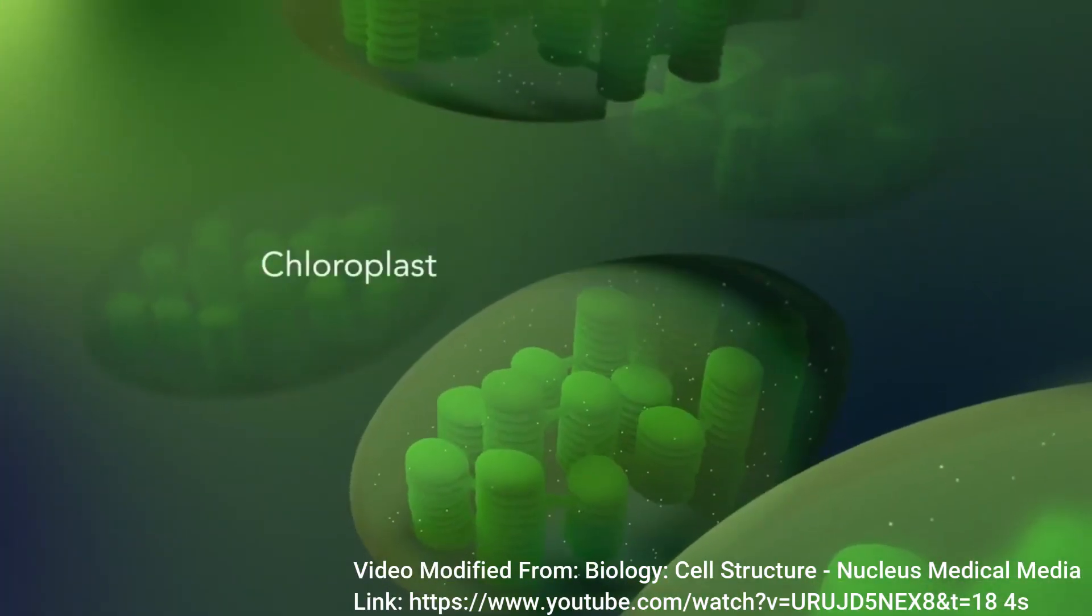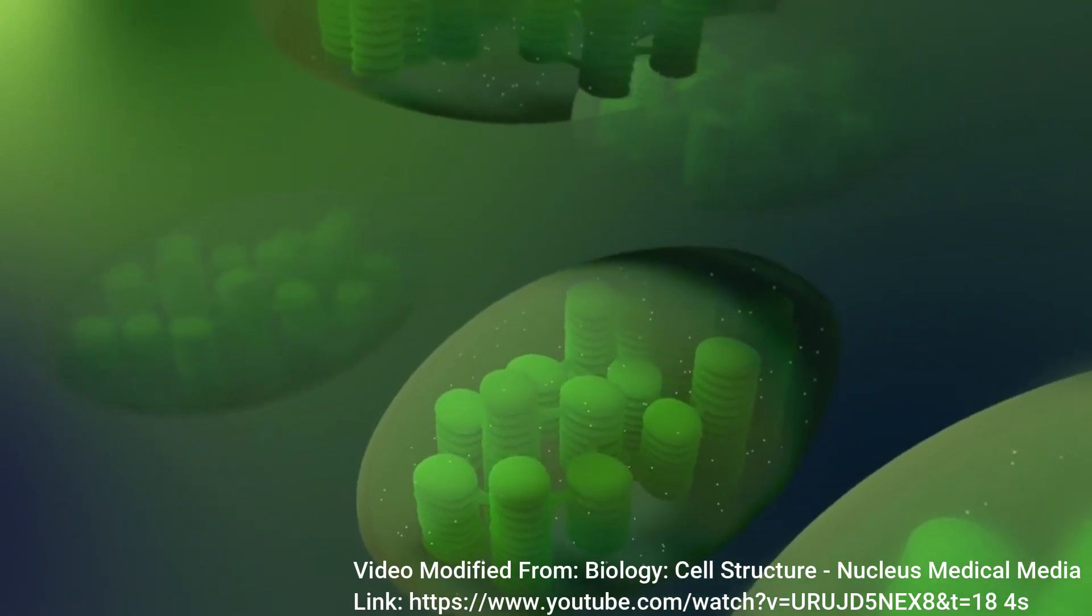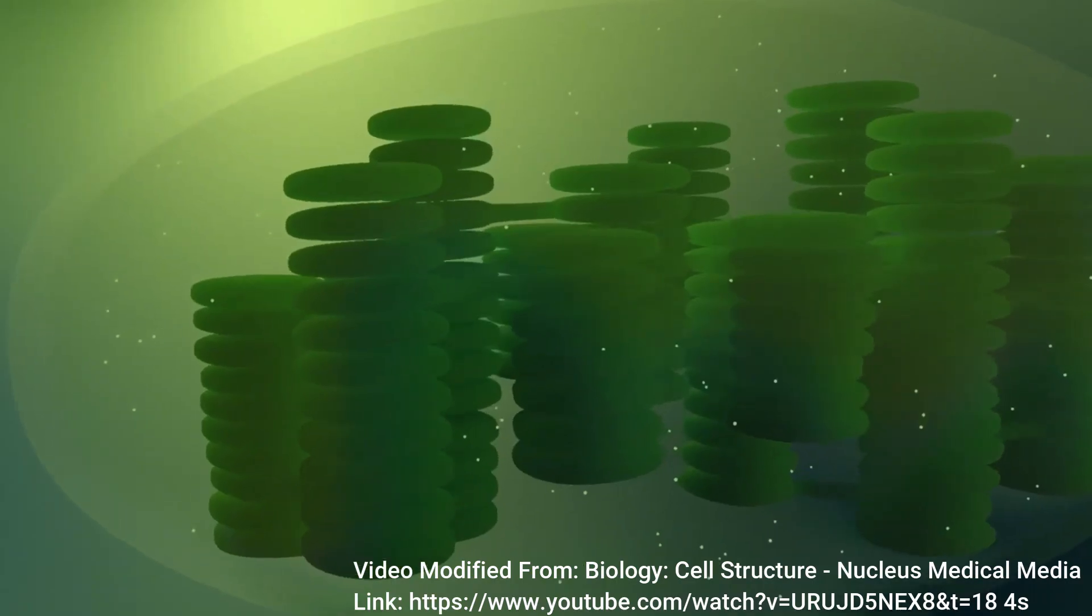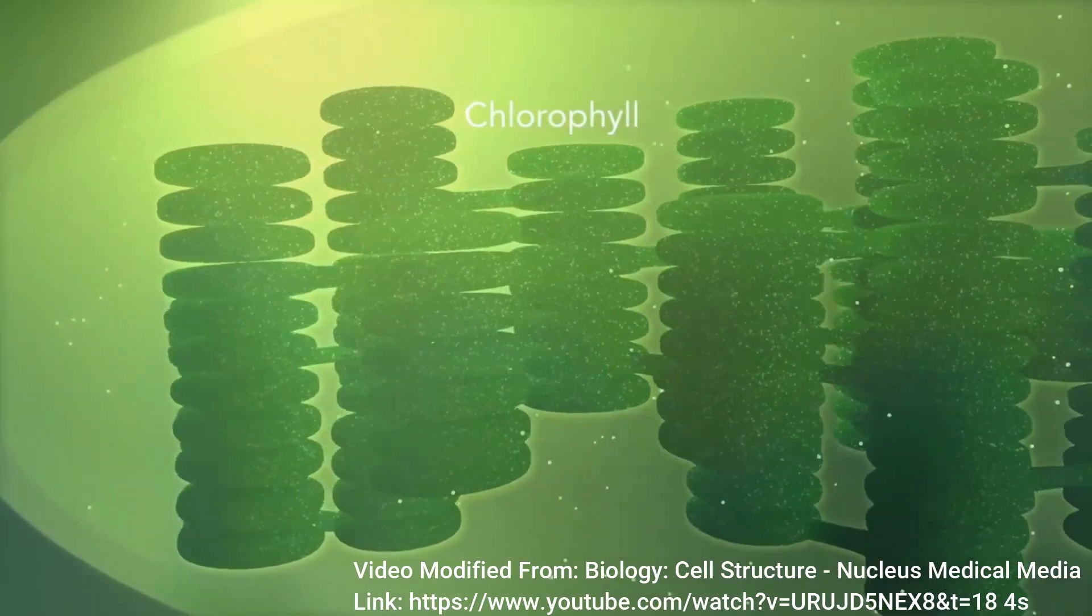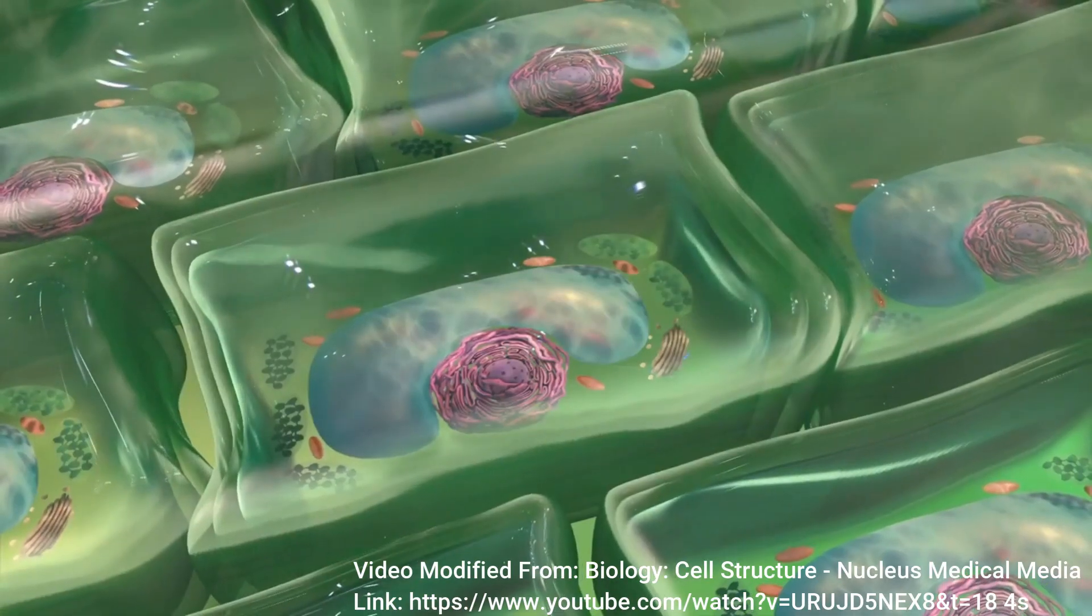In addition to the cell wall, plants also have chloroplasts, which help them conduct photosynthesis. The green color is due to the pigment chlorophyll that is in the chloroplasts and is the reason that plants are green.